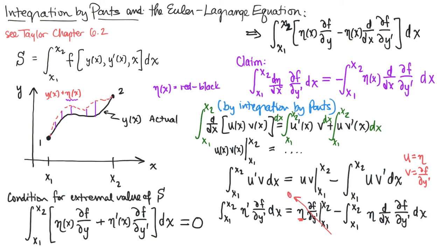when you evaluate this boundary term, it goes to zero at the end point. And that, my friends, leads us to this purple equation, which is how we go from an integral equation that involves eta and eta prime to one that only involves eta.